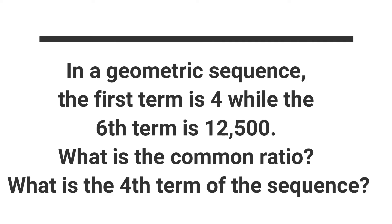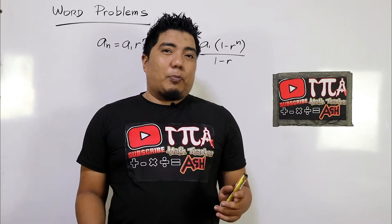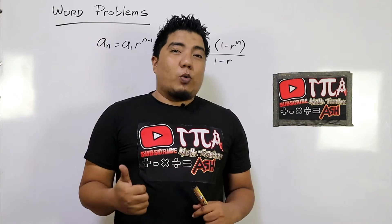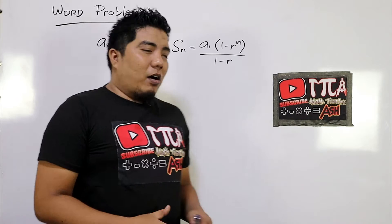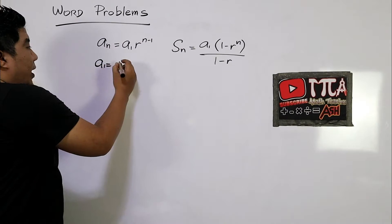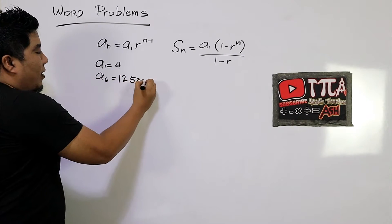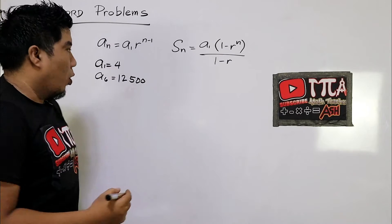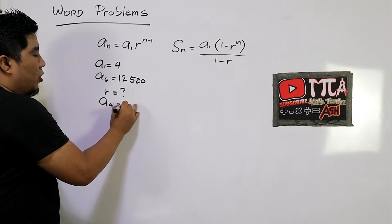In a geometric sequence, the first term is 4, while the sixth term is 12,500. What is the common ratio? And what is the fourth term of the sequence? In this problem, we have two things unknown: the first one is the common ratio, and the second one is the fourth term. The given are A sub 1 is 4, and A sub 6 is 12,500. So the question is: what is r, the common ratio, and what is the fourth term?